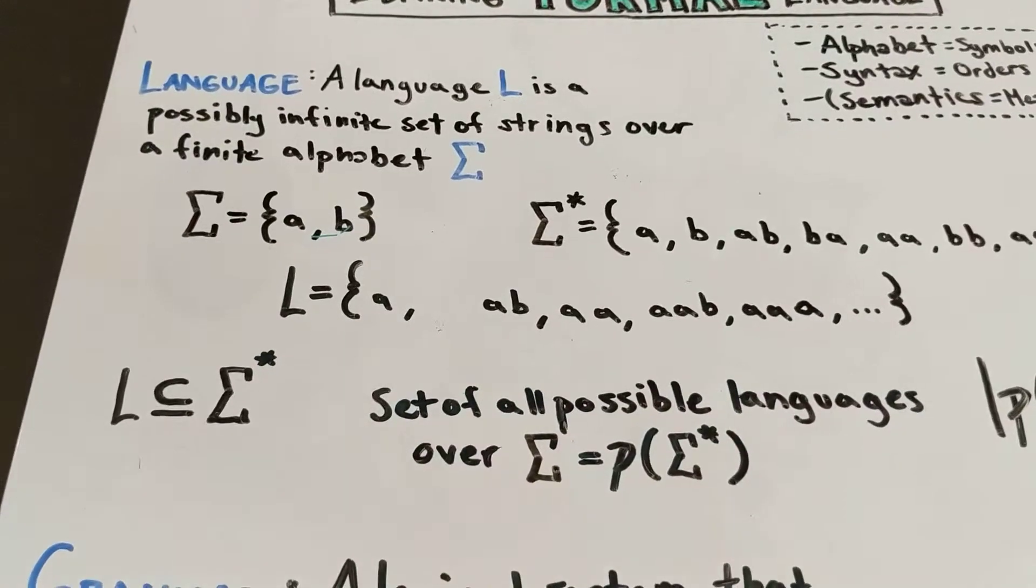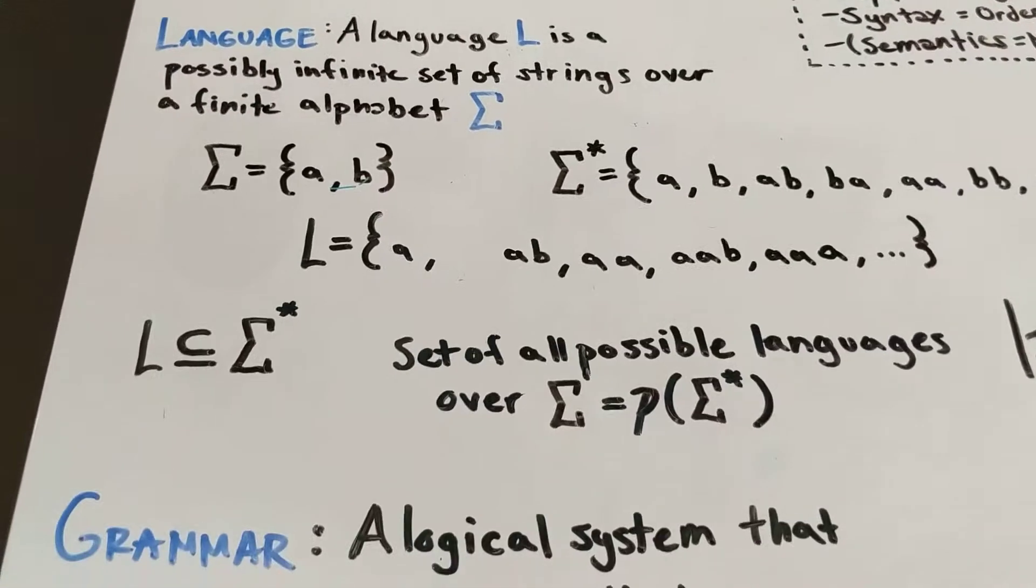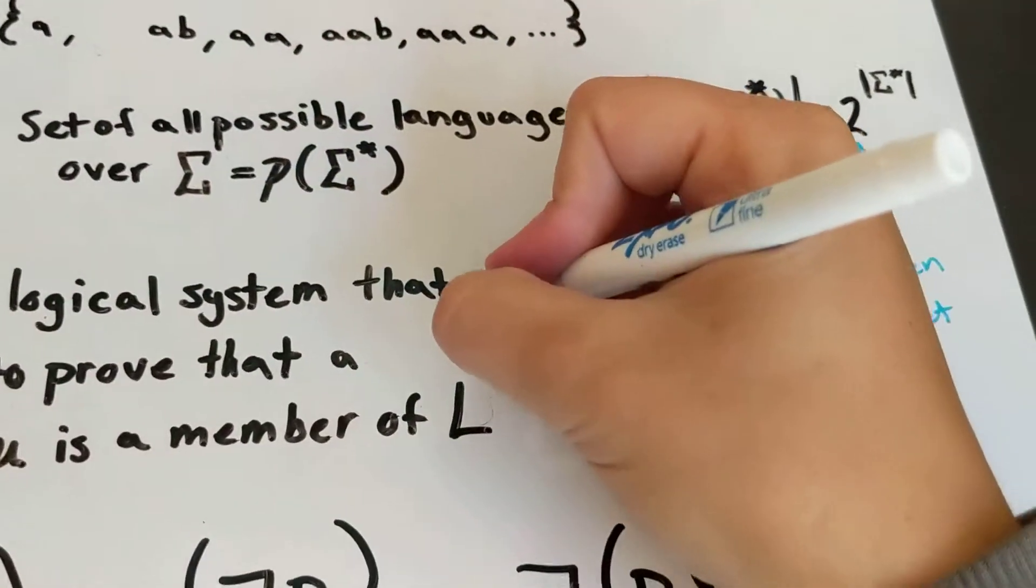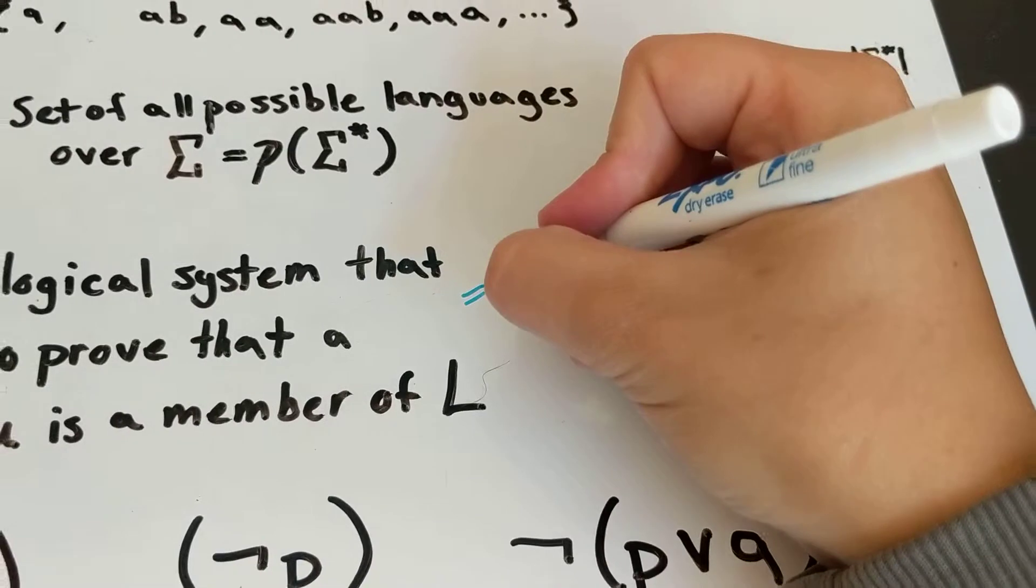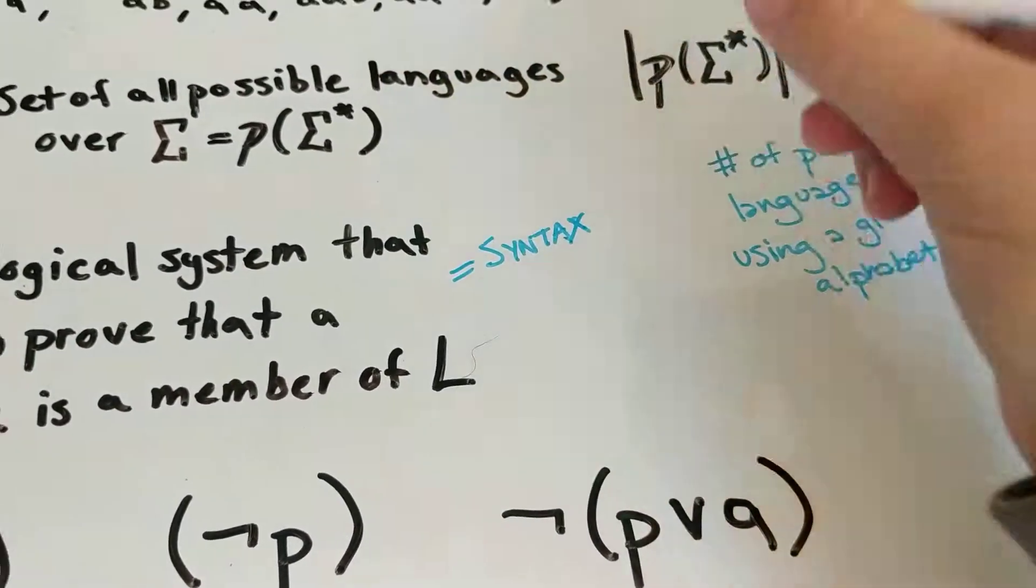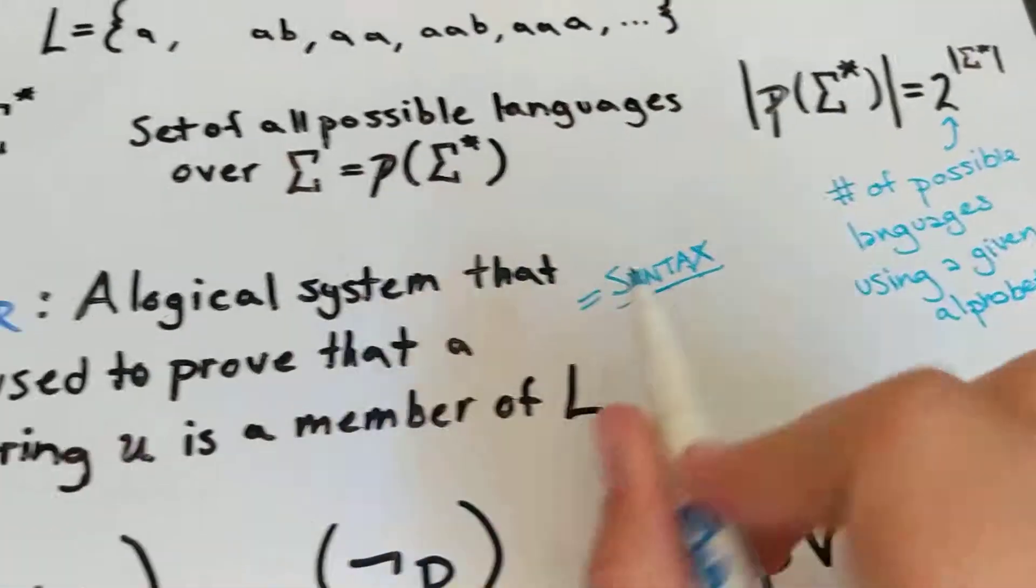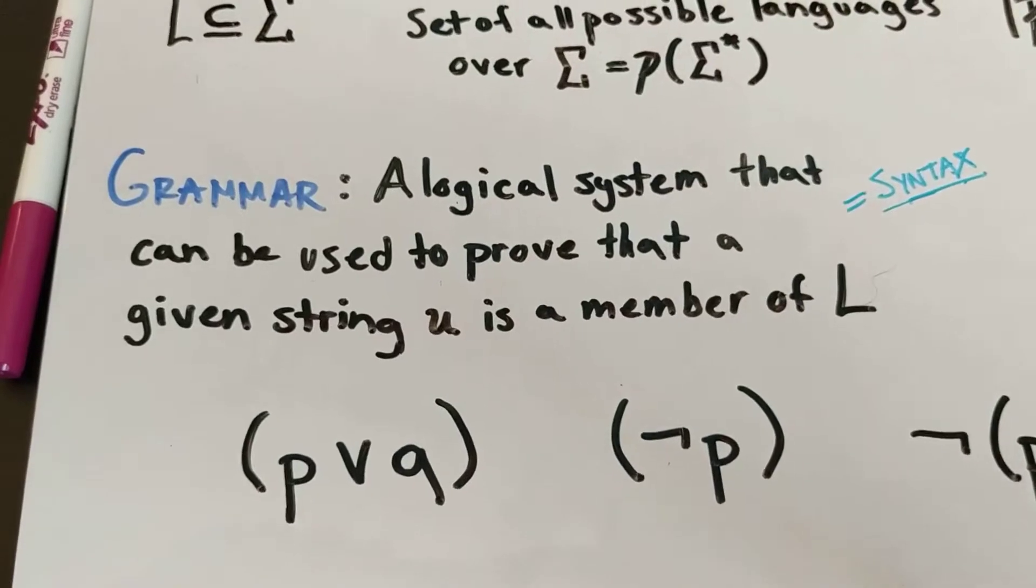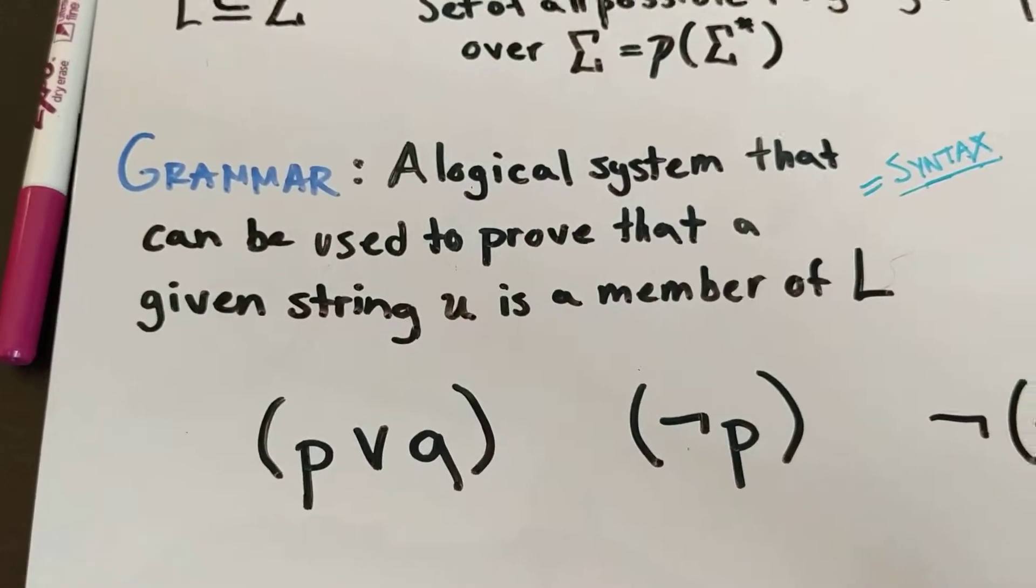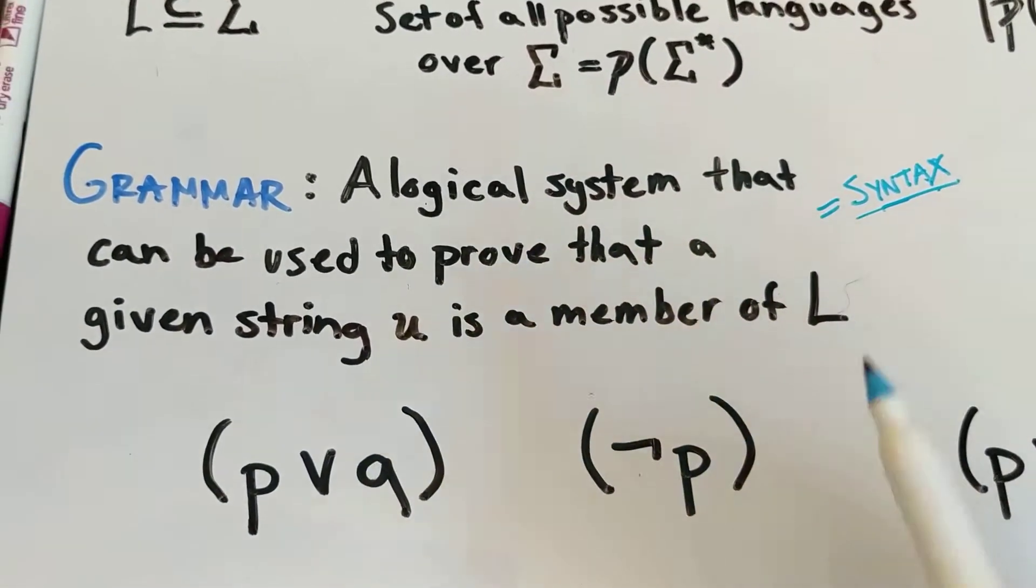So once we have a language, which is just a set of strings, once we have our language, we can create a grammar for that language. And we've talked about this as a syntax before. That's the word we've used when we were doing logic. We called it a syntax. Now we're going to call it a grammar. And a grammar is essentially any logical system that you can use to prove that a given string is a member of L or is not a member of L.